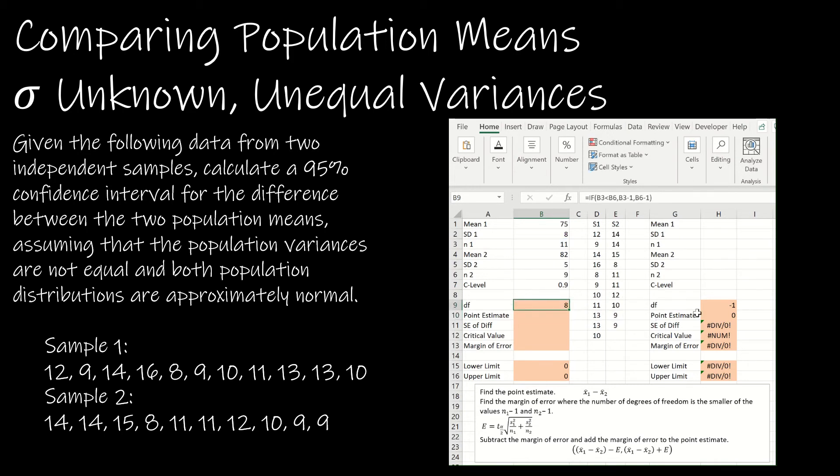Notice my degrees of freedom is 8. That's what we had found before, because what Excel did is said, well, 11 is actually bigger than 9, so we're going to take that smaller one, 9, and subtract 1. So that's how I find the degrees of freedom without having to do any work. The point estimate is simply the difference of the means. So mean 1 minus mean 2. The standard error of the differences is using the formula. So I'm going to take the square root, and then I'm going to take the first standard deviation and square it and divide it by the first sample size, and then add to that the second standard deviation squared divided by the second sample size.